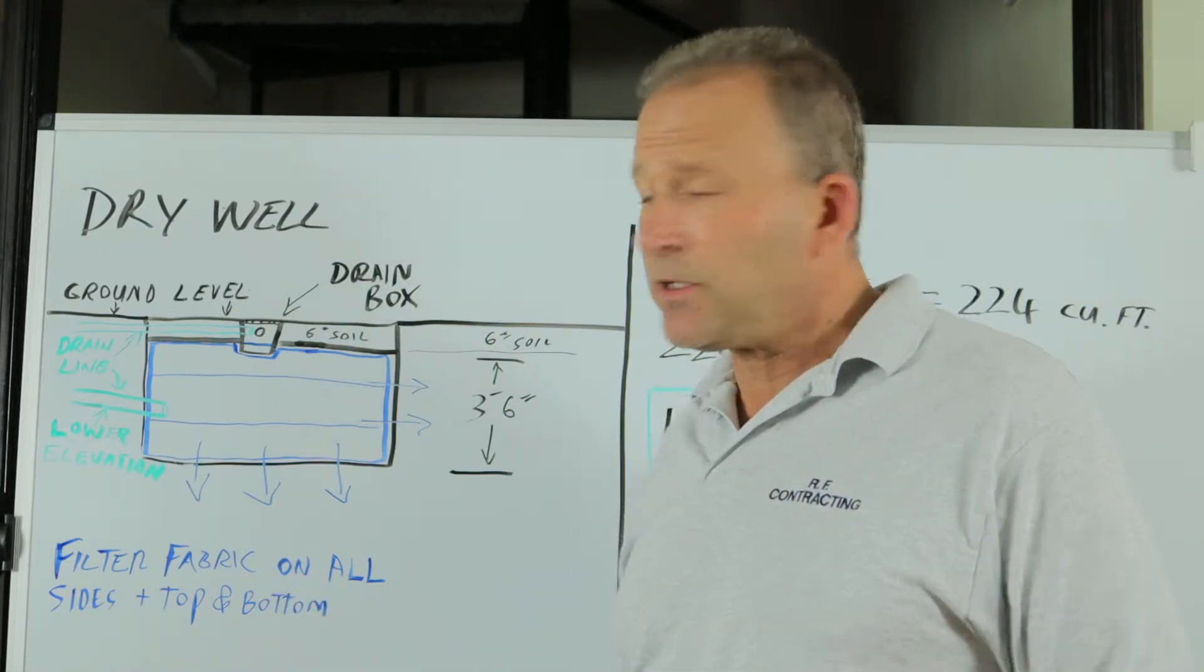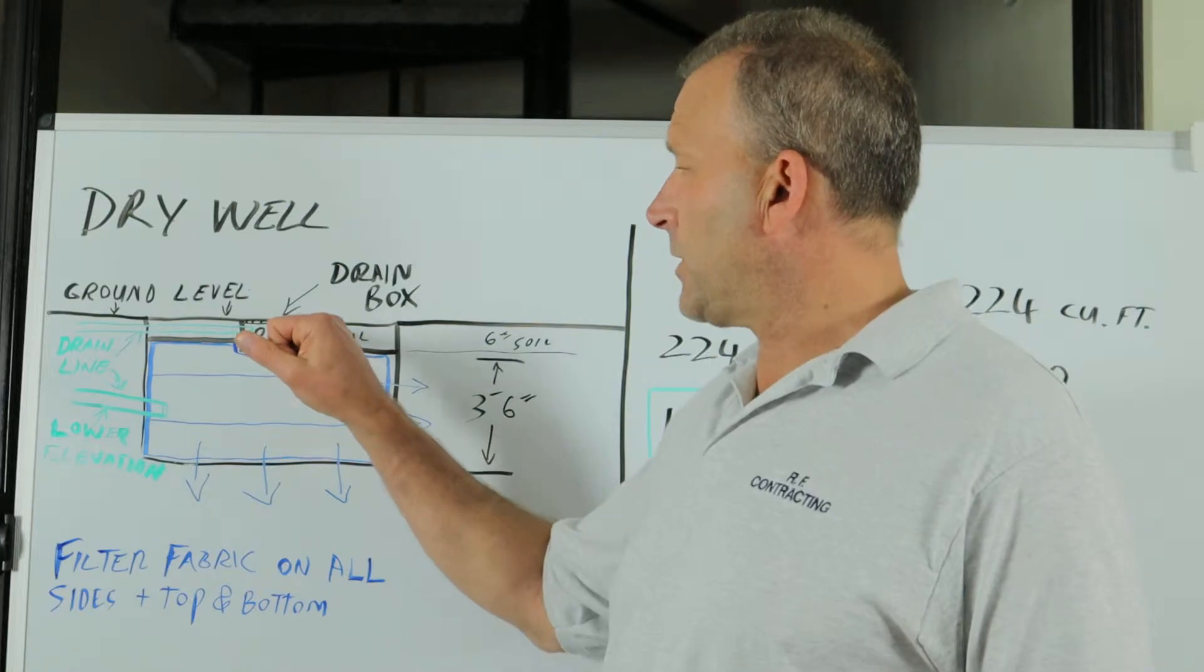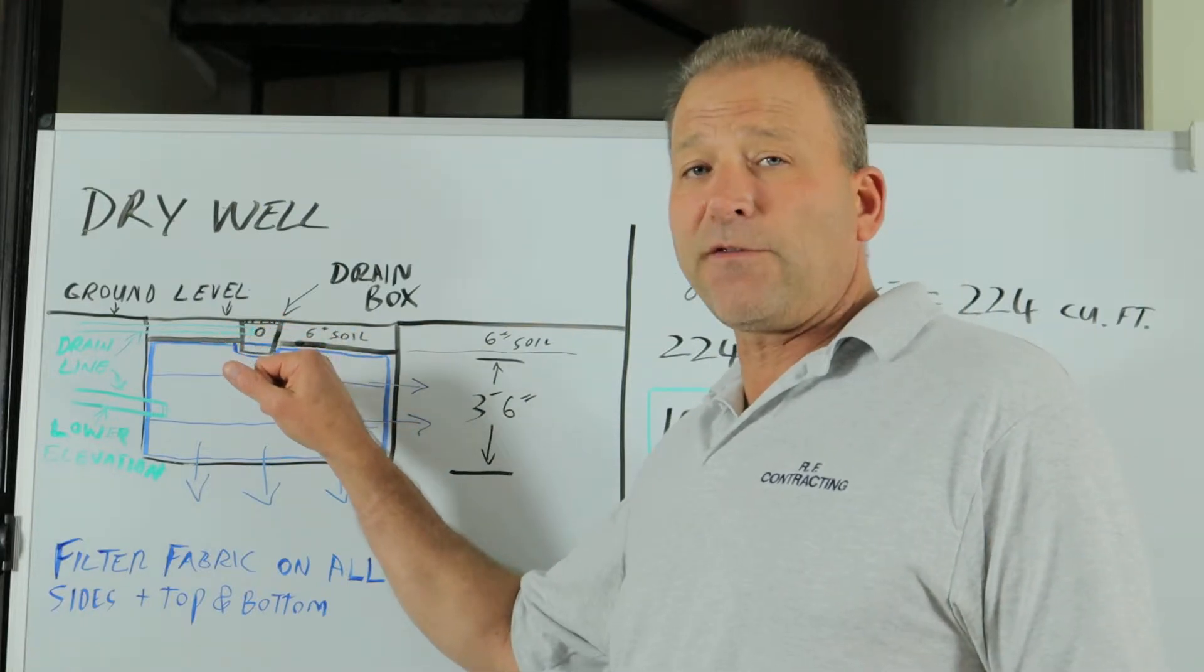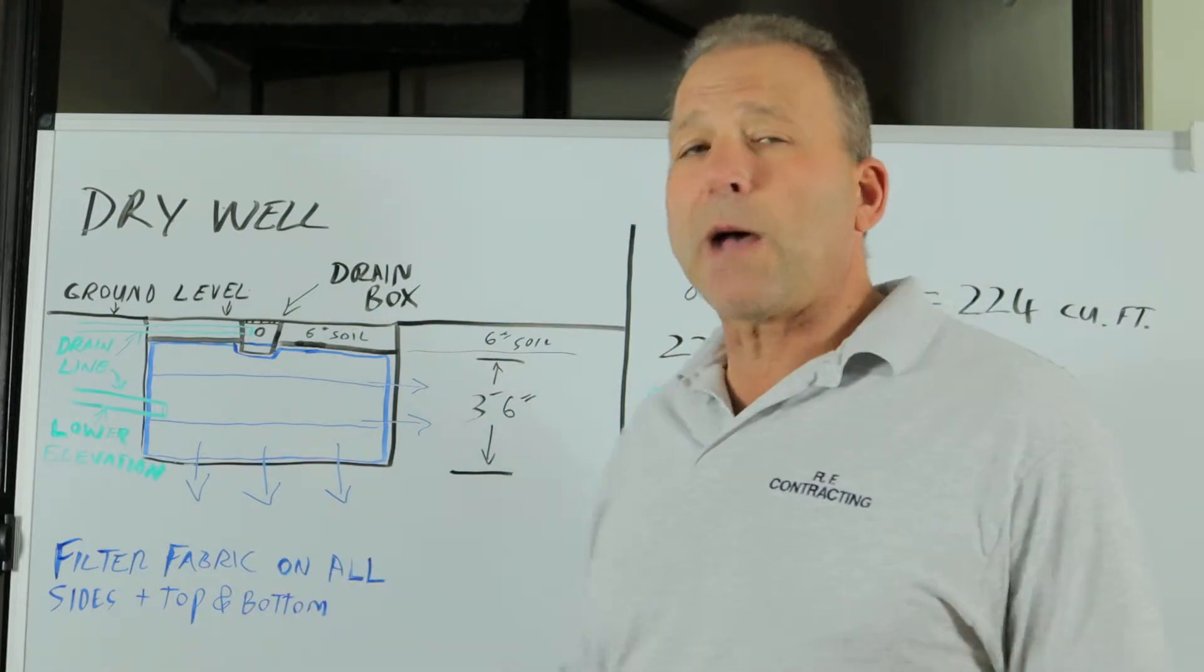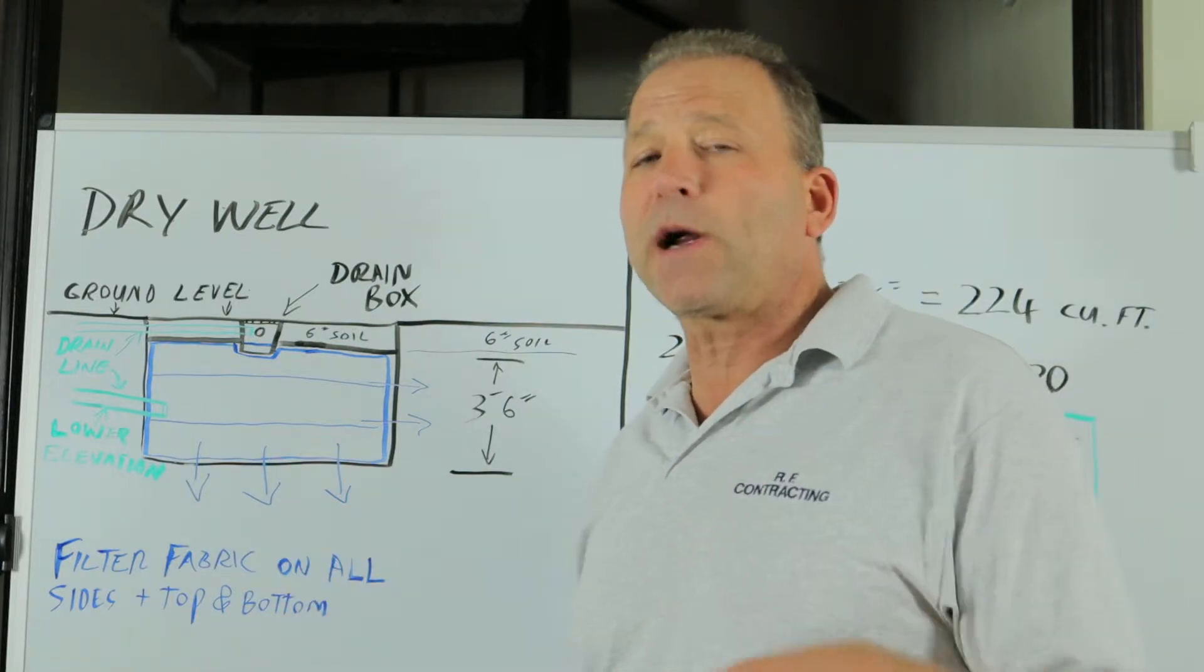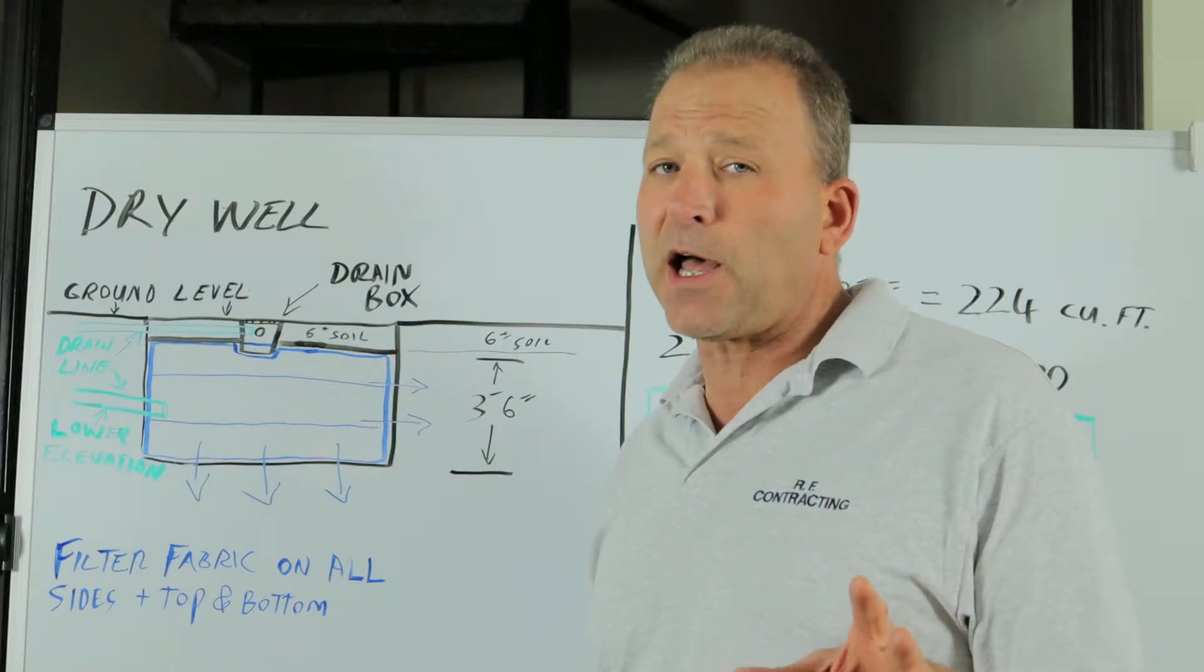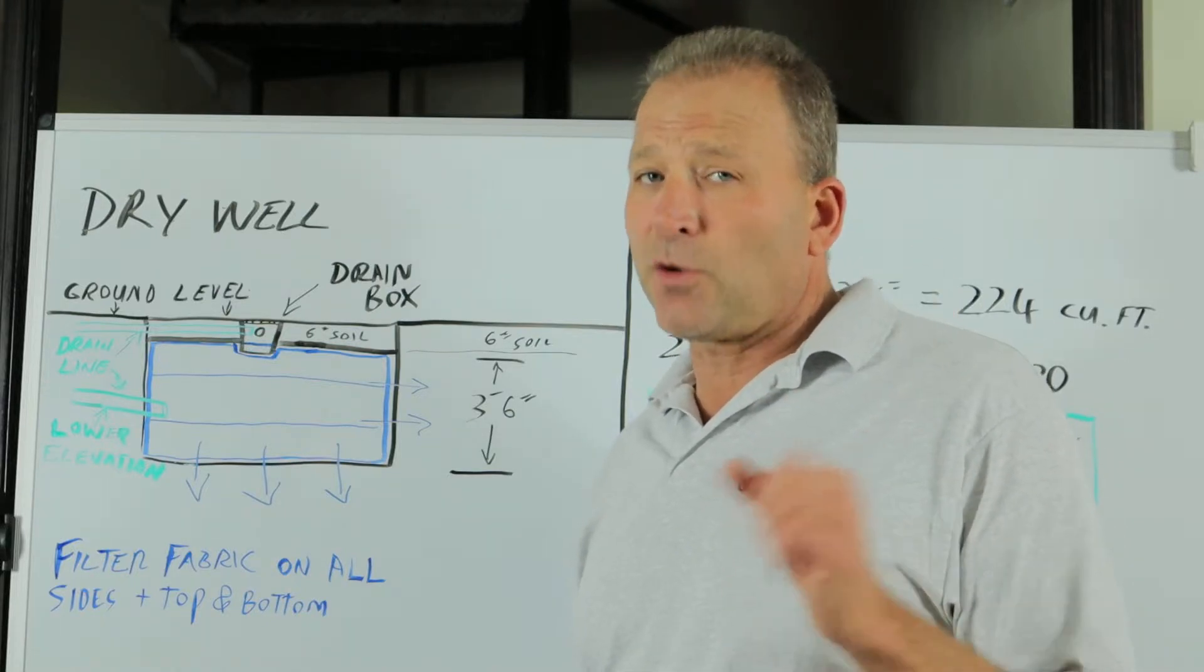You can do this two ways: by tying directly into the drain box itself—the drain boxes come with cutouts for the pipe to go right in—or you can drop your drainage line to a lower elevation to get a better pitch in your pipe, which in most cases is the way to go.